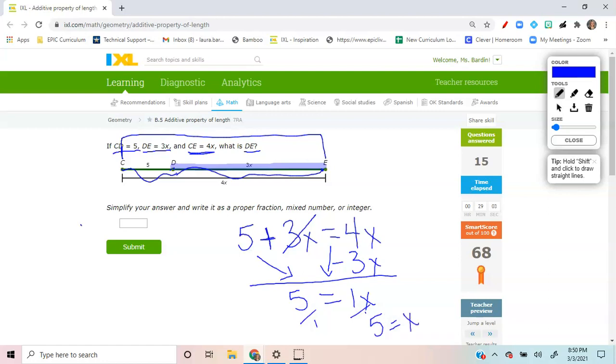So if this answer said, what does X equal? We'd be done. But this question says, what is only D to E? So D to E equals 3X or 3 times X. Well, what is X? X is a 5. So this is initially going to say 3 times 5.